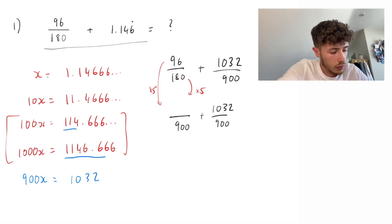The top, obviously, of the right one is going to stay as 1032. The top of the left one is going to become 480. If we add those together, we're going to get 1512 over 900.